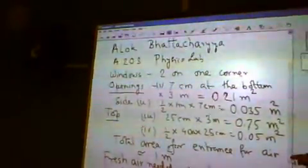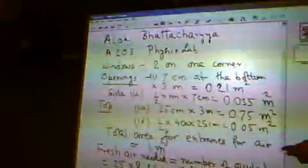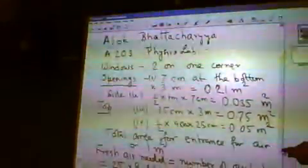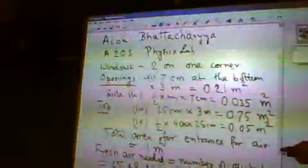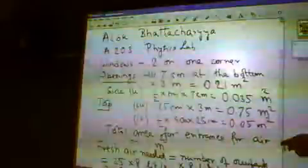Windows are two on one corner, opening about 7 centimeters at the bottom, multiplied by 3 meters wide—that's 0.21 square meters. On the side there is a triangular opening, area will be 0.035 square meters.